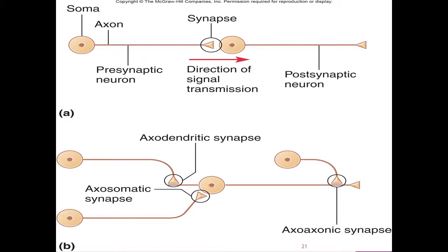Here on this slide we look at the different forms of the presynaptic neuron. Here's your presynaptic neuron and here's your synapse. The signal is traveling from left to right to your postsynaptic neuron. In B, you have an axodendritic synapse where the axon, or the synaptic cleft, is close to and synapsing with the dendrite. The axosomatic synapse synapses with the soma, and the axoaxonic synapses with the axon — those are the three visual aspects of the three forms.